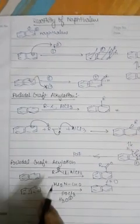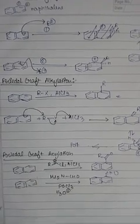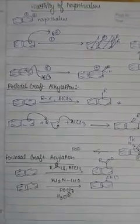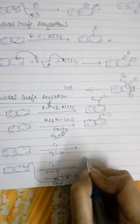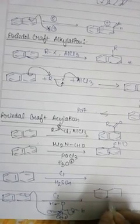During sulfonation, the SO3H group will attach to C2 position instead of C1 position because of steric interaction. If SO3H group attaches to C2 position, the reaction proceeds like this.